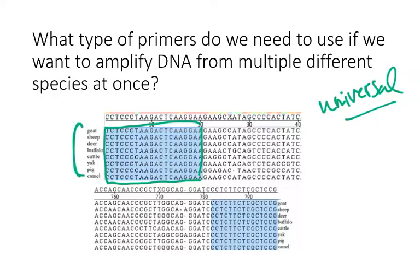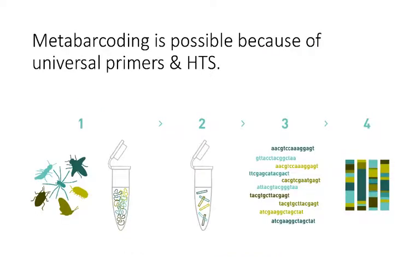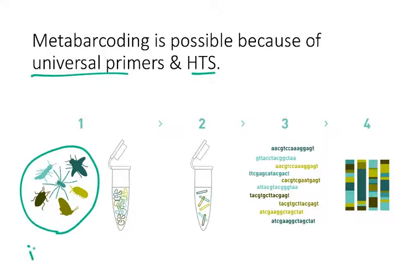We're able to do that because universal primers exist that allow us to amplify DNA from multiple different species at once. So metabarcoding and bulk sampling is possible because of two main reasons: universal primers and high-throughput sequencing. Here's another image showing a workflow for metabarcoding, starting with a bulk sample of invertebrates.